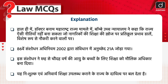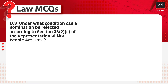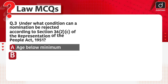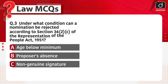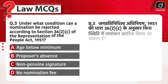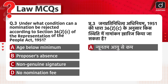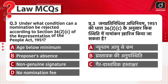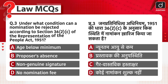Next question: under what condition can a nomination be rejected according to Section 36(2)(c) of the Representation of the People Act, 1951? Options: age below minimum, proposer's absence, non-genuine signature, or no nomination fee. Jan Pratinidhitva Adhiniyam 1951 ki Dhara 36(2)(c) ke anusar kis sthiti mein namankhan kharij kiya ja sakta hai? The correct answer is option C — non-genuine signature. Iska sahi jawab option C hai — gair vastavik hastakshar.